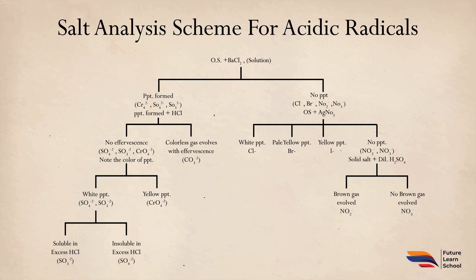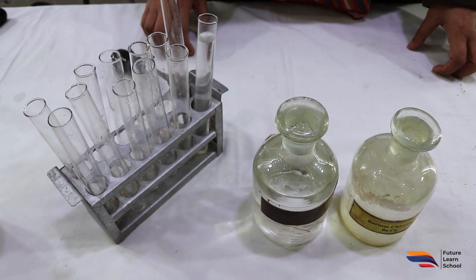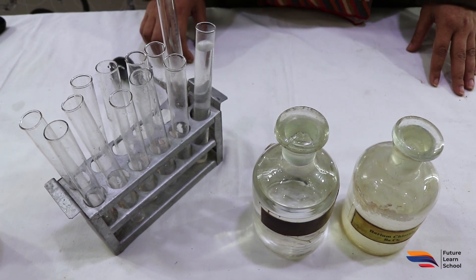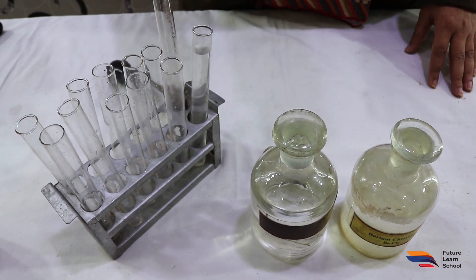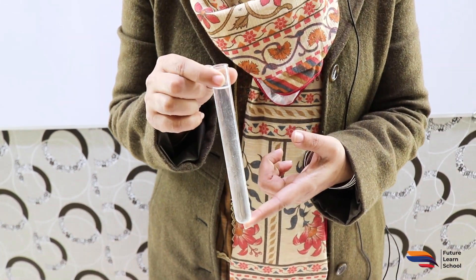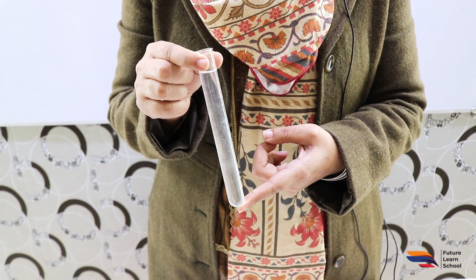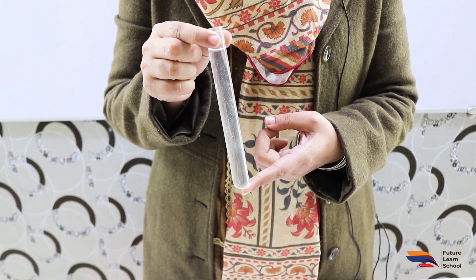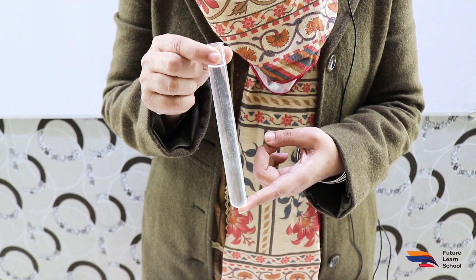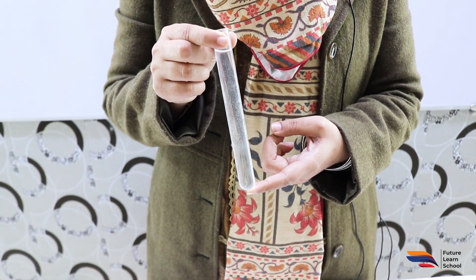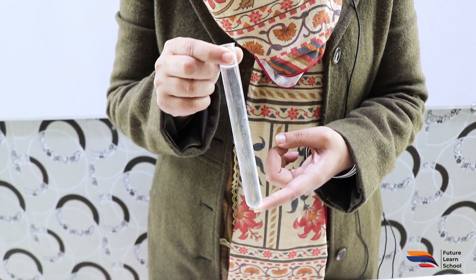Now we move to the practical portion. When you receive a salt for acidic radical analysis, you must first make a solution. Here we have an unknown salt; we add water to it and prepare the original solution. We then identify whether the acidic radicals belong to Group 1 or Group 2.